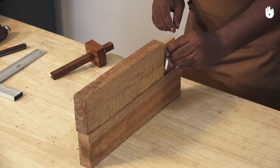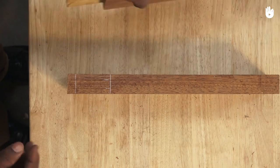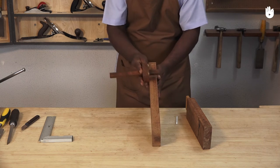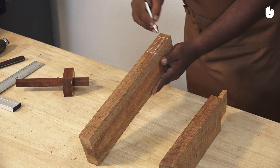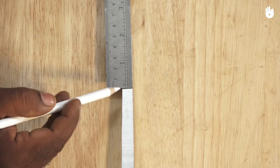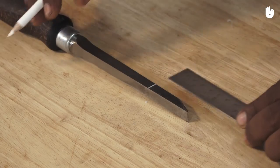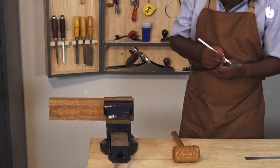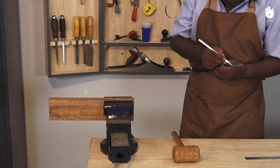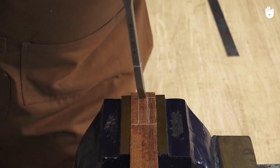Highlight the lines with a pencil. Mark the desired depth of the mortise on the blade of the chisel for reference. Now that the markings have been made, clamp the workpiece onto the vise.